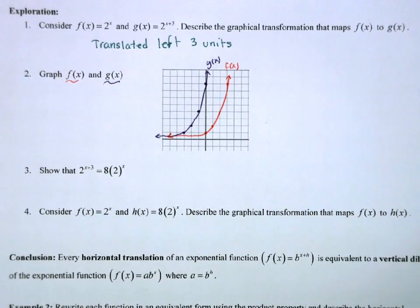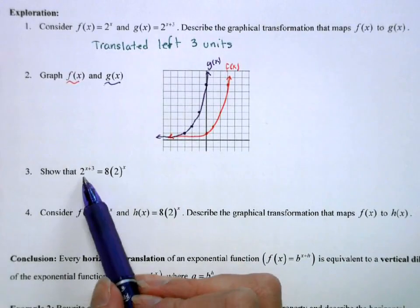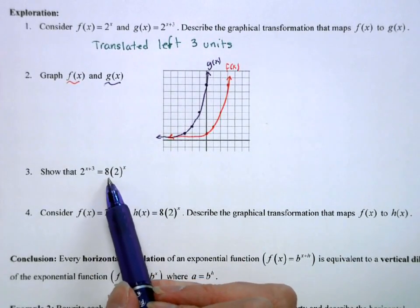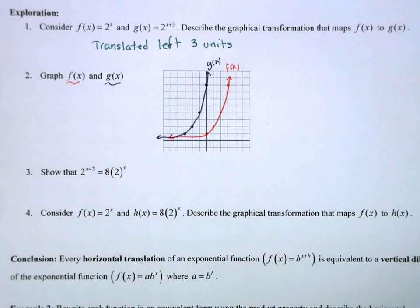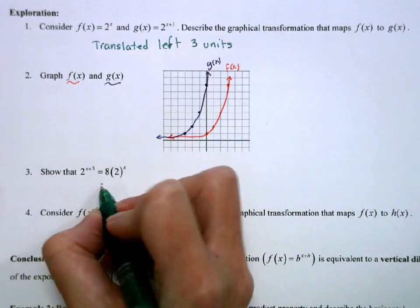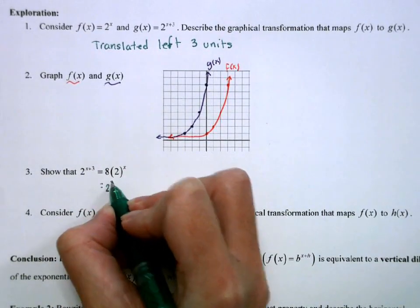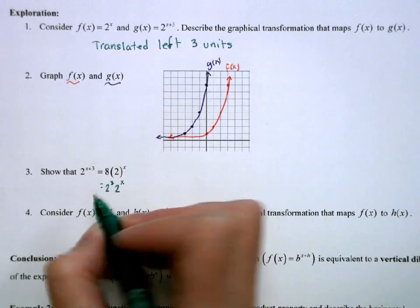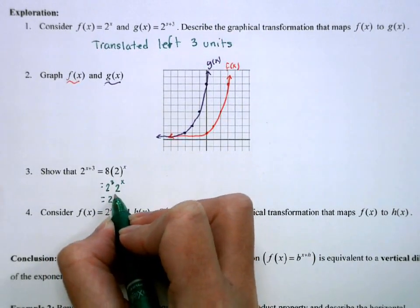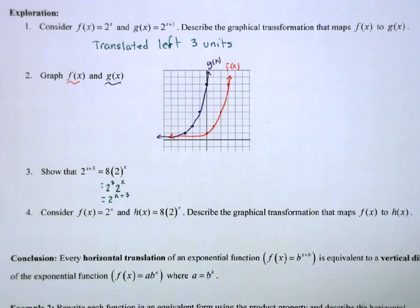Now let's look at the properties and how this relates. So 2 to the x plus 3 we're saying is somehow equal to 8 times 2 to the x. So we'll prove that. If I make this 2 cubed and 2 to the x, I can rewrite this as 2 to the 3 plus x, which would be equivalent to x plus 3.